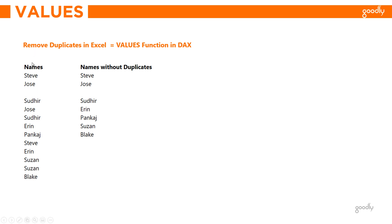In Excel, you would select this range of cells, click on remove duplicates, and you end up with a clean list. The VALUES function accepts a single column of a table as input and delivers a one-column table without any duplicates as output. So this is a table with a single column only, and this is what my input is for the VALUES function.